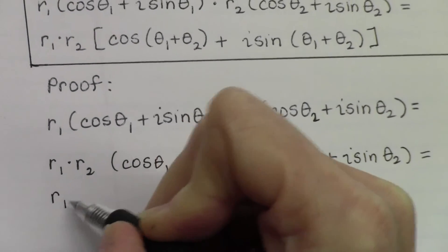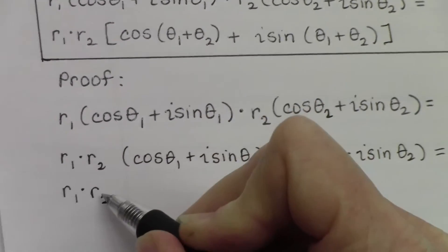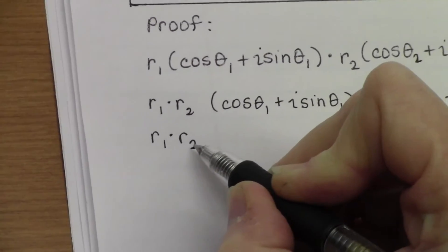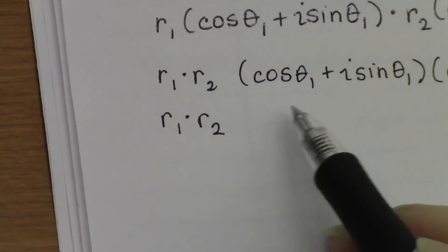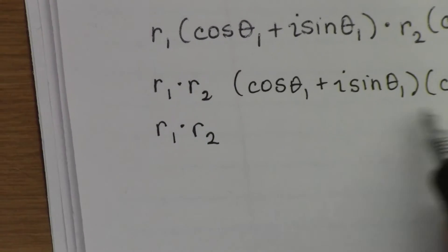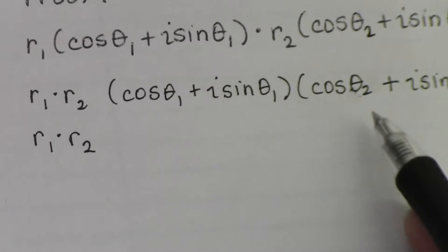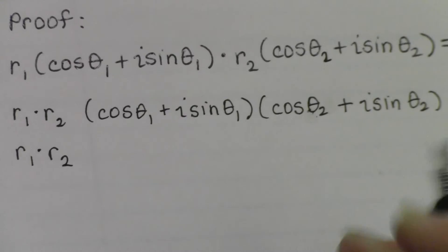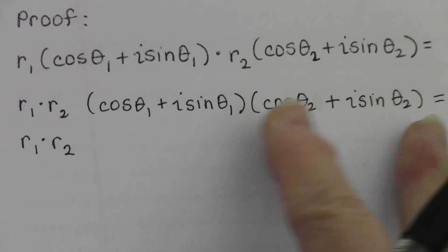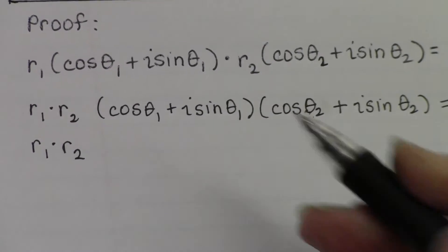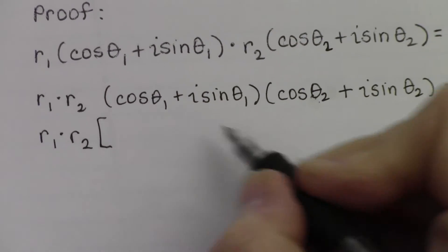I'm not doing anything for the whole rest of this proof except bringing down r₁ times r₂, because that's already the way I want it. But I am working on this product right here. What I'm going to do is FOIL it — multiply first times first, then the outers, the inners, and last times last. So I'm going to get a big mess here.